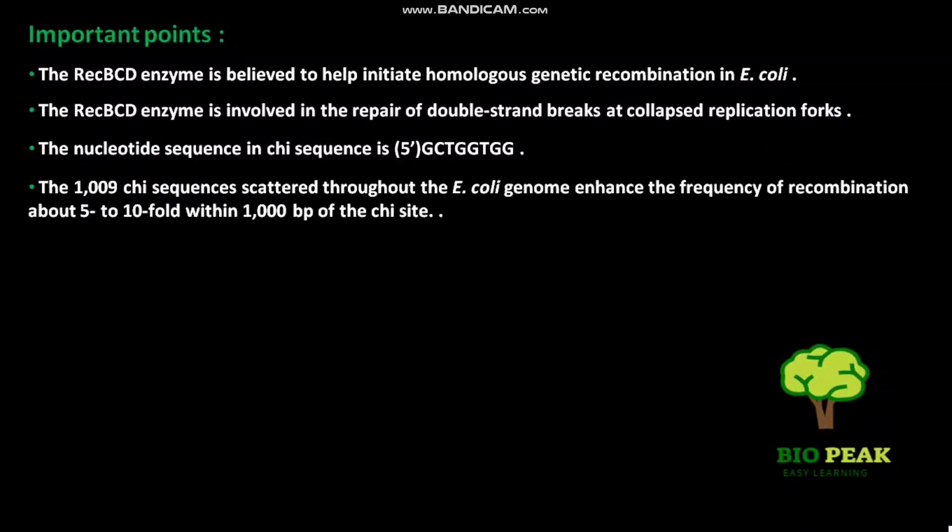The 1009 chi-sequences scattered throughout the E. coli genome enhance the frequency of recombination about 5 to 10 fold within 1000 BP of the chi site.